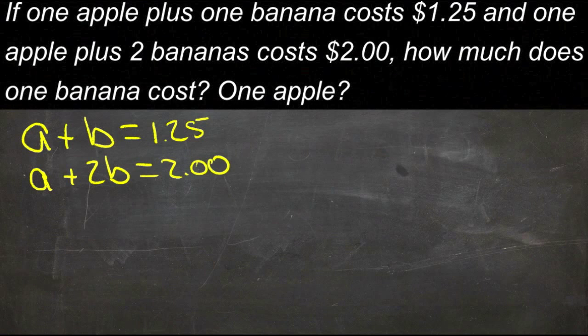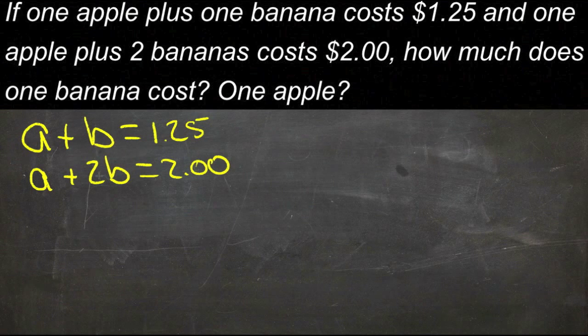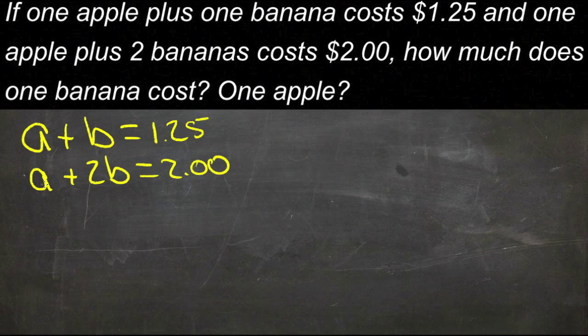So, what we need to do to make this work is set one of our variables opposite itself in the other equation. Now, here I have one b and two b's, or one a and one a. So, the a's are very nearly opposite already. So, let's use that one.